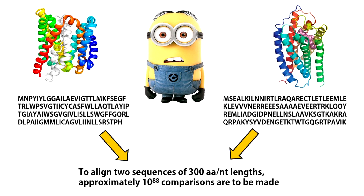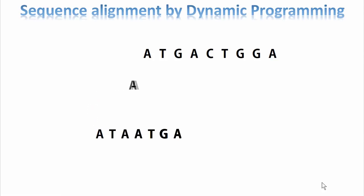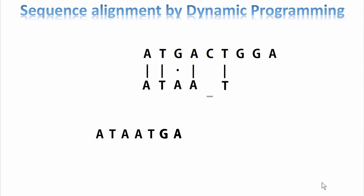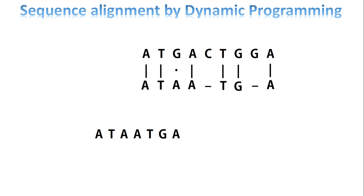Needleman and Wunsch in 1970 proposed that the solution is to break the problem down into a progressive building of an alignment two residues at a time. They started at the end of each sequence, then moved ahead one amino acid pair at a time, allowing for various combinations of matched pairs, mismatched pairs, or extra amino acids in one sequence. In computer science, this approach is called dynamic programming.